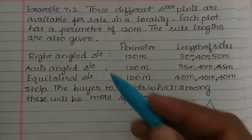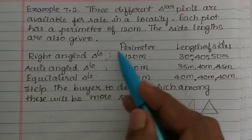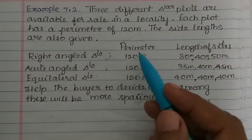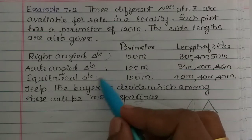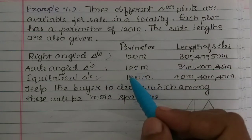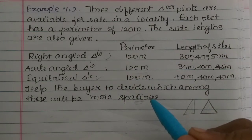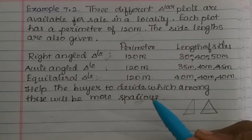For the right angle triangle, the formula is half into b times h. For the equilateral triangle, there is root 3 by 4 times a squared. We will use these formulas along with Heron's formula to find the area of each triangle.